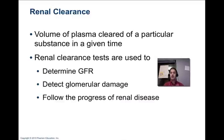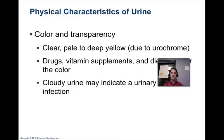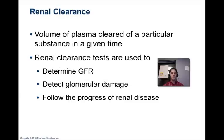Renal clearance is how much of a substance is cleared from a given volume of plasma in a particular time. These tests are used to determine glomerular filtration rate, assess glomerular damage, and follow the progression of renal disease. Inulin is one of the substances used to measure glomerular filtration rate.